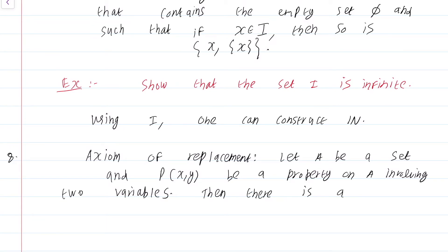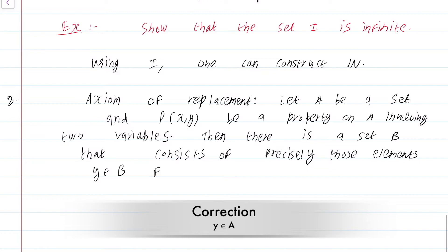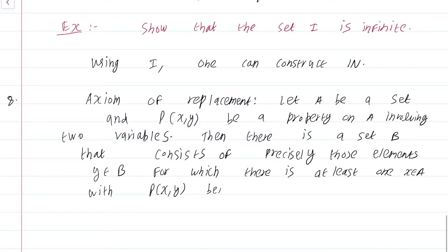Then, there is a set B that consists of precisely those elements y in B for which there is at least one x in A with p of x, y being true. That is indeed a long sentence and indeed a very complicated axiom. This axiom is primarily used to construct many sorts of infinite sets. Paul Halmos has interpreted this axiom as saying, anything intelligent one can do with a set yields a set.